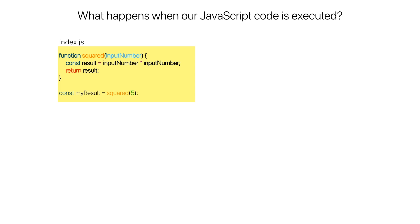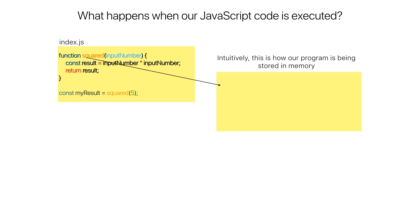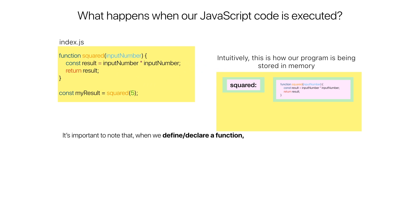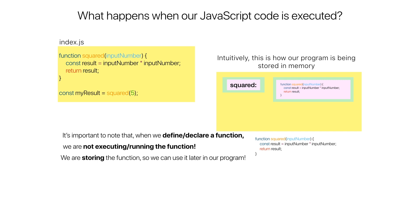Here let's pretend we have a file named index.js. In that file we've declared a function and then executed that function, storing the return value in a variable called result. When we define or declare a function, we are not executing or running it — we are storing the function so we can use it later in our program.